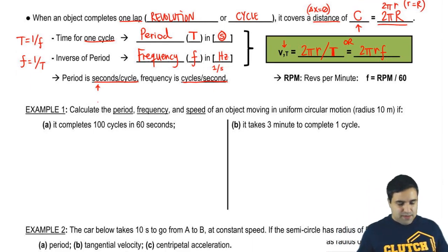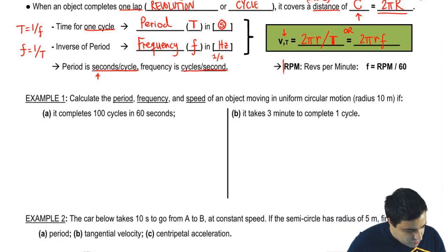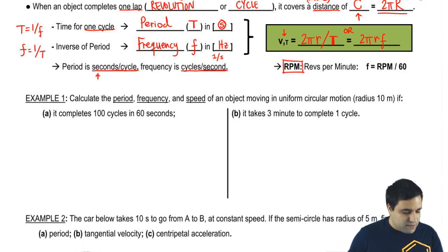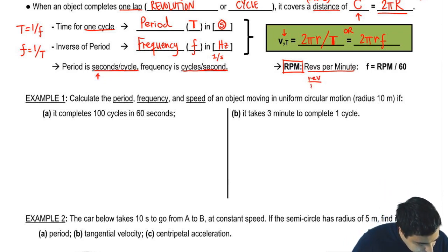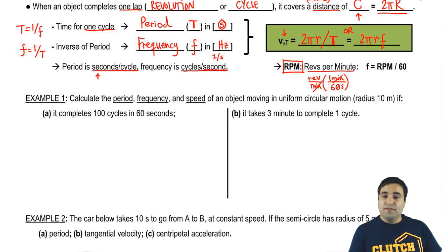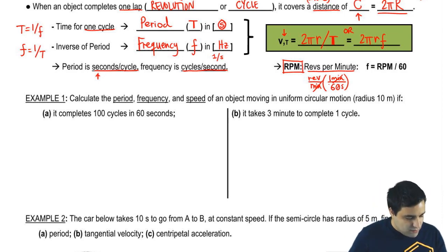And then one last point before we do some examples is sometimes you might get something in terms of RPM. You'd be told something spins at, you know, 30 revolutions per minute. RPM stands for revolutions per minute. The problem with revolutions per minute is that you can't use minutes as a unit in physics. So revs per minute has to be converted. I convert this into seconds by doing this. And when you do this, you get revs per second. Revs per second is the definition of frequency.